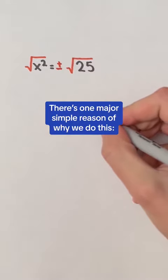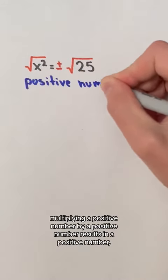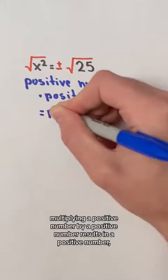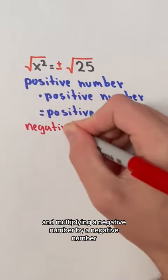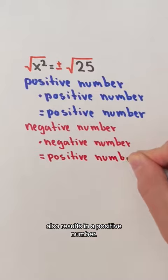There's one major simple reason why we do this. Multiplying a positive number by a positive number results in a positive number, and multiplying a negative number by a negative number also results in a positive number.